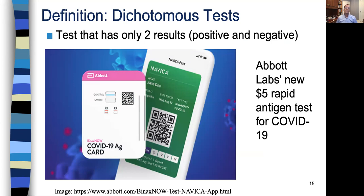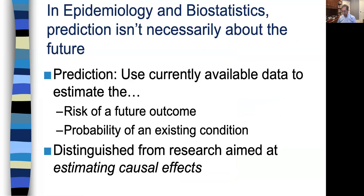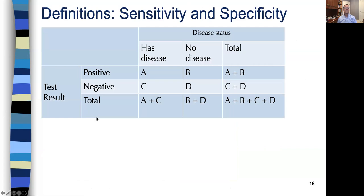This is the COVID test by Abbott Labs, their Binax test. It costs about $5 and it gives a quick result. That's the test we're going to be talking about later for the two-by-two table example. Sensitivity, specificity, accuracy, and predictive value — positive and negative — are all parameters that measure how often the test gives the right answer. We want all of them to be as close as possible to 100%, because that would make a good test.